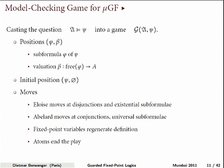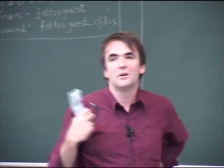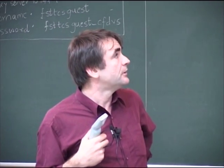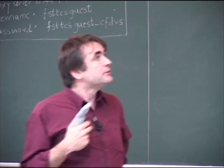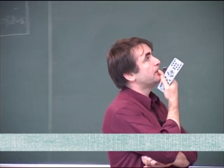Model checking for guarded fixed-point logics is exactly parity games. What we do is take the first-order evaluation game and then do something about the fixed points. For the first-order part there will be no secrets, and the fixed points do exactly what the priorities are responsible for. Morally, this game is a product between the formula and the structure — you can think of the syntax tree of the formula, with some loops because of the fixed-point variables.